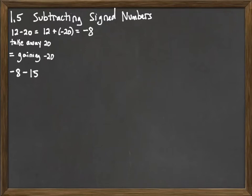Same idea here where we have negative 8 minus 15. Taking away 15 is the same as gaining a negative 15. And then we apply our rules for adding signed numbers. They have the same sign so we add them. 8 and 15 is 23. And we keep the negative sign.